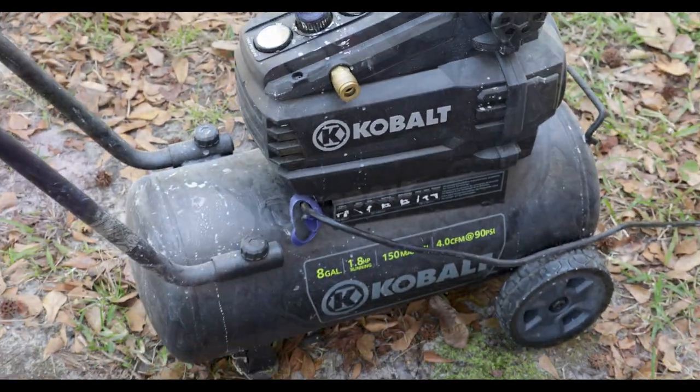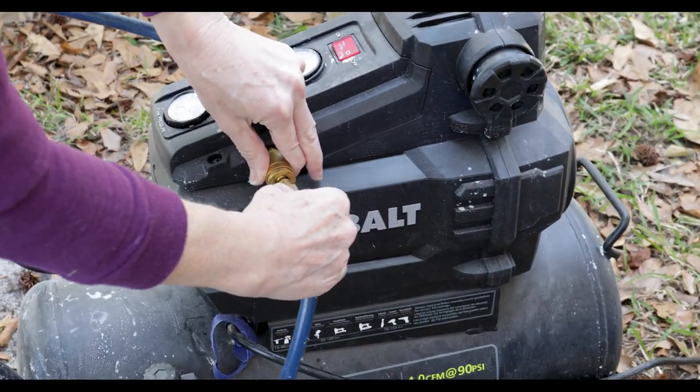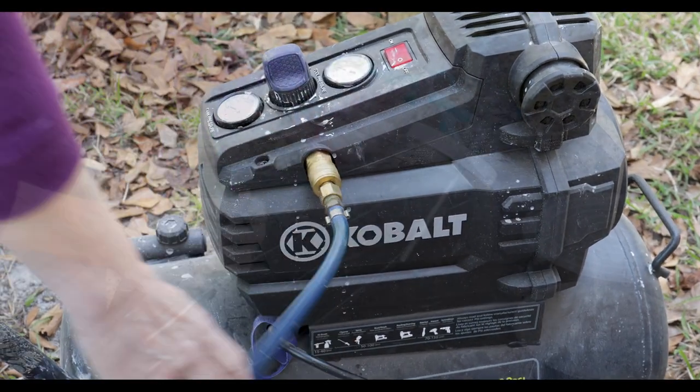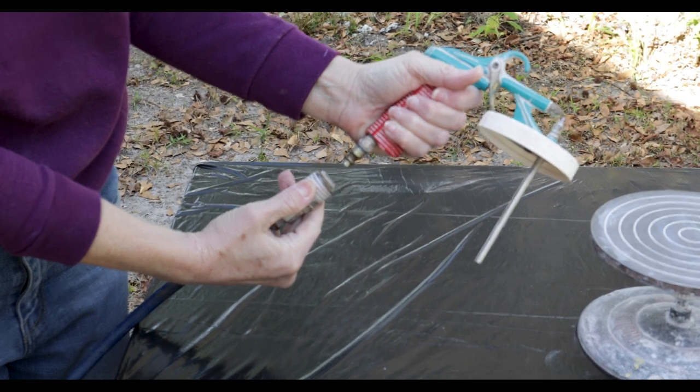I have a small compressor which is perfect for this job. I just pull the collar back and attach the air hose here. On the other end, I attach the spray gun in the same way.